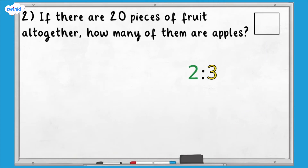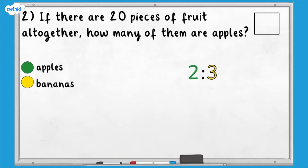Question two: if there are 20 pieces of fruit altogether, how many of them are apples? Let's use counters to help us solve this problem. The green counters represent apples and the yellow counters represent bananas. For this type of question, we need to look at the total number of pieces of fruit.